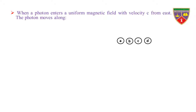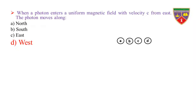When a photon enters a uniform magnetic field with velocity C from east, the photon moves along: Option A: north. Option B: south. Option C: east. Option D: west. The key is west. Therefore, the correct option is D.